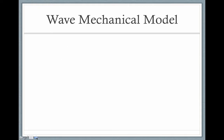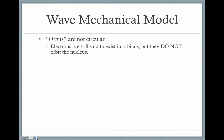Let's start by looking at some key points of the modern model of the atom, also called the Wave Mechanical Model or the Quantum Mechanical Model. First, even though we still call them orbitals, it's really important to note that orbits are not circular here. So electrons do not orbit the nucleus. They do, however, exist in areas that we call orbitals. This is really just an unfortunate coincidence of language. We held on to the name, but the electrons no longer orbit in a circular orbit like we used to assume.